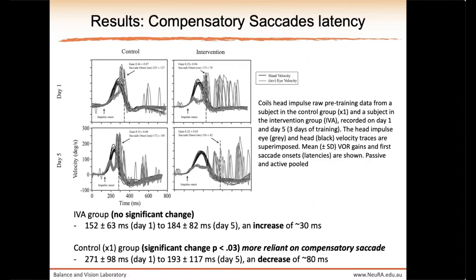Looking at compensatory saccades: with normal VOR (gain of 1), eyes and head move in unity, vision is stable, and no compensatory eye movements are needed. In the control group, VOR gain was reduced through times-one training and the VOR became more reliant on compensatory saccades to cover the deficiency — hence saccade latency became shorter. In the IVA group, as VOR gain improved, reliance on compensatory saccades decreased, shown by increased latency of the compensatory saccades.